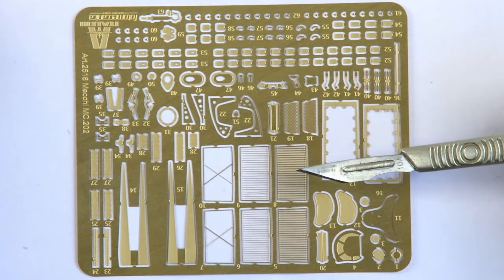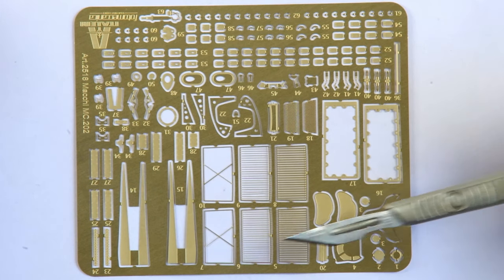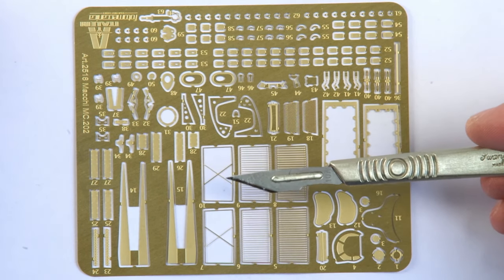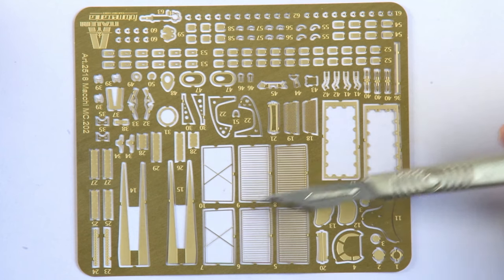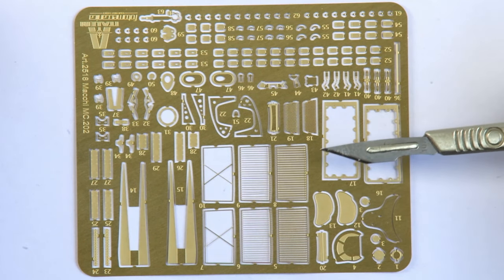So let's start with that photo-etch fret in close-up. There are several meshes for the radiators, some parts of which are extremely delicate, but I'll judge them properly when I've actually built them.